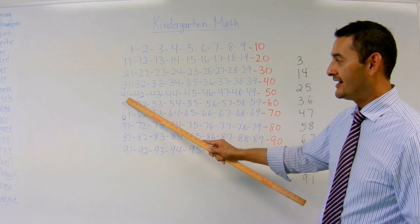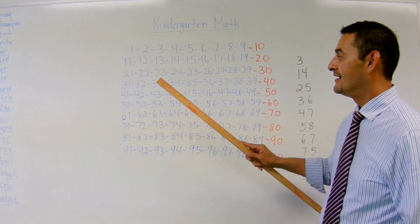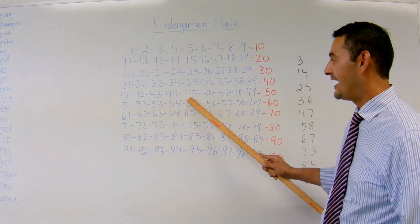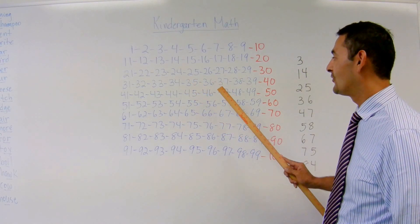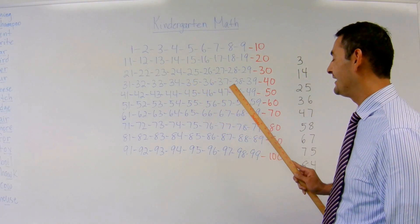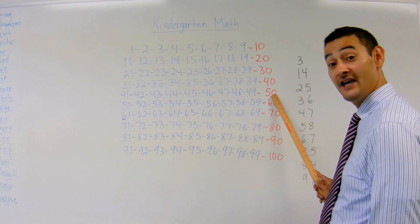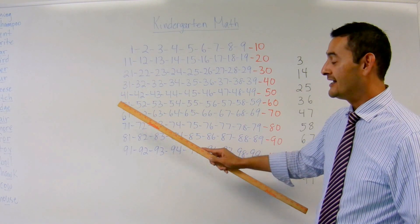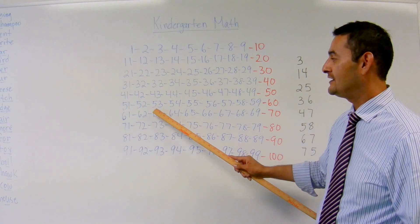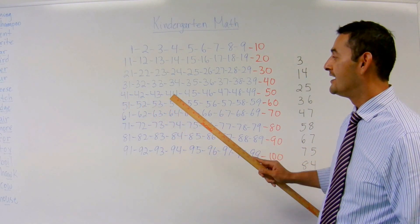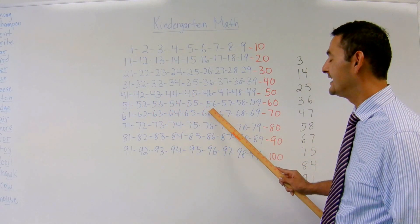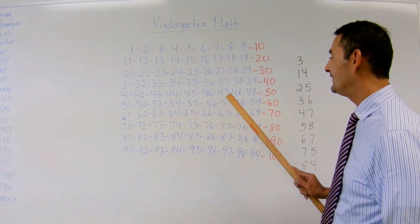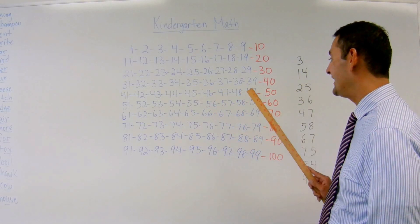41, 42, 43, 44, 45, 46, 47, 48, 49, 50. You're doing an awesome job. Ready? 51, 52, 53, 54, 55, 56, 57, 58, 59, 60.